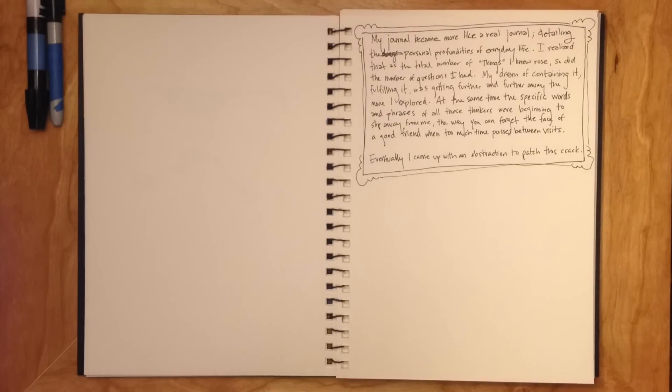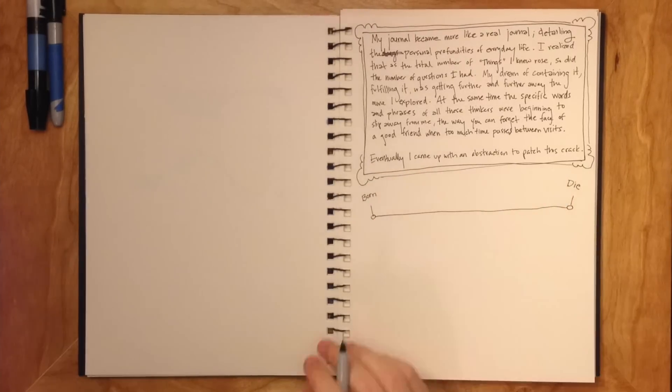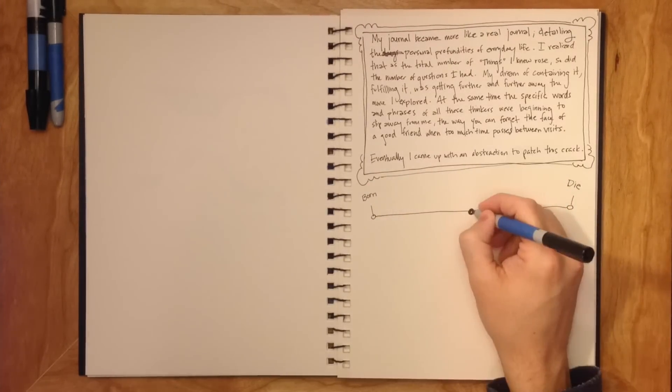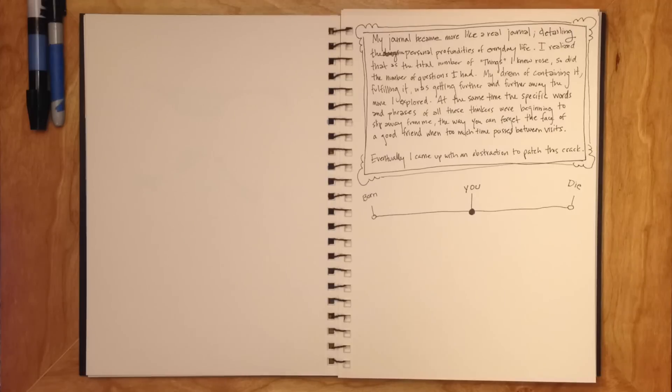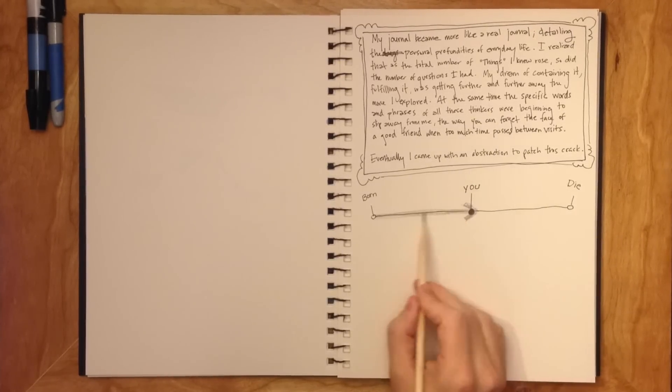We usually imagine someone's life like this: a single line that begins with birth and ends with death, and the point furthest to the right represents you. And more importantly, that's you experiencing your own life.